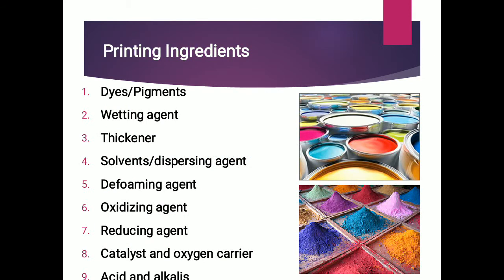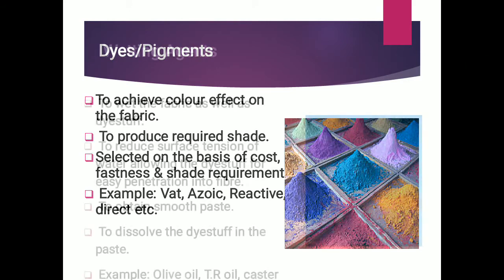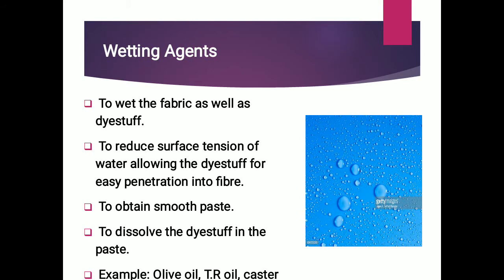Now we will see some ingredients required in the printing process. The basic component is dye or pigment, which is the coloring material. Some other auxiliaries are used: wetting agent, thickeners, solvent or dispersing agent, deforming agent, oxidizing agent, reducing agent, catalyst and oxygen carrier, acid and alkali, and some miscellaneous agents. Dye or pigment is the main coloring material used to achieve color effect on the fabric, such as diazo dye and pigment. A wetting agent is an auxiliary used to wet the fabric as well as the dye stuff by reducing the surface tension of water, allowing the dye stuff for easy penetration into the fiber. Examples include olive oil and tar oil.